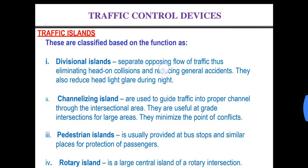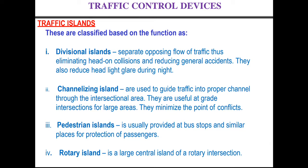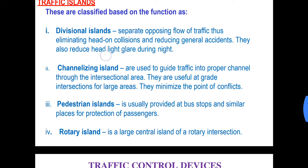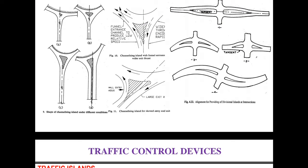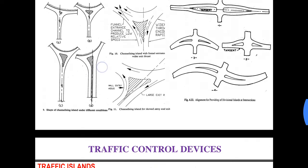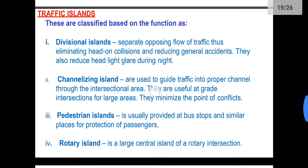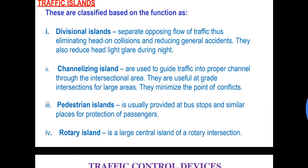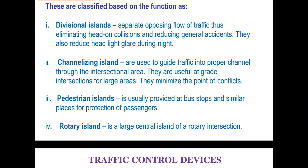Divisional islands separate opposing flow of traffic, thus eliminating head-on collisions and reducing general accidents. They also reduce headlight glare during night. What they do is they separate opposing traffic and also separate different lanes, so there are less chances of head-on collision and there is reduced glare to the drivers from the opposite lane.